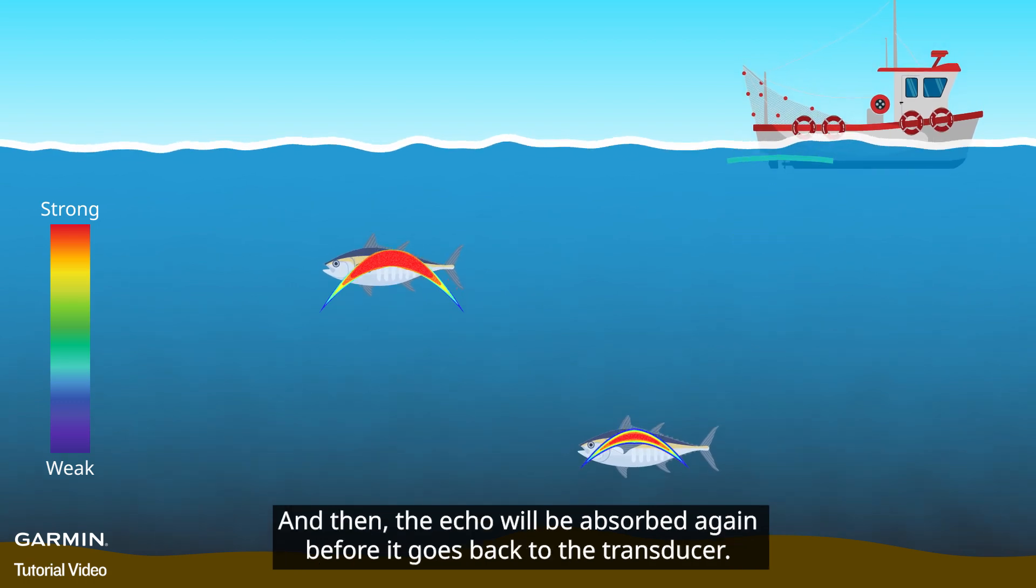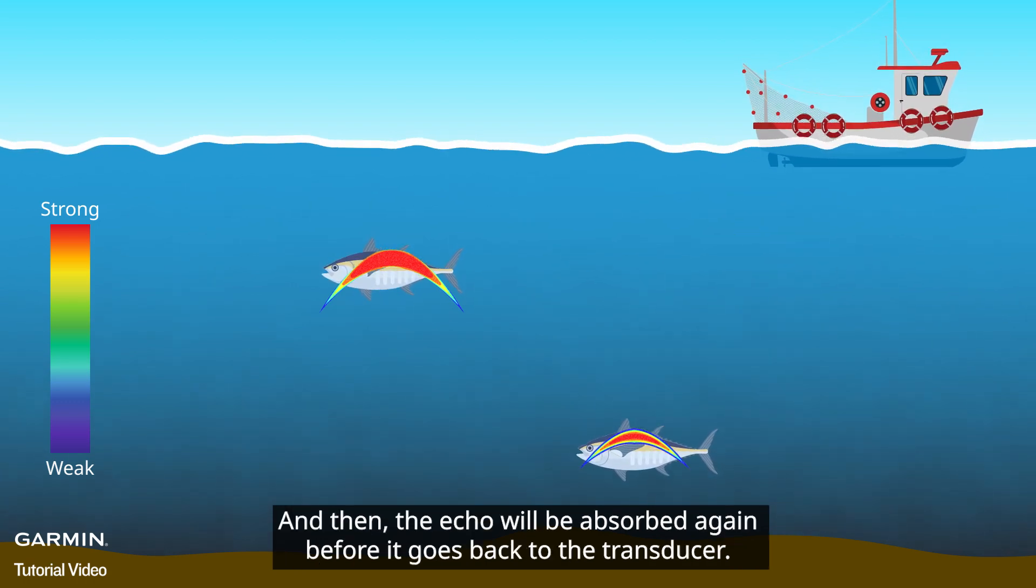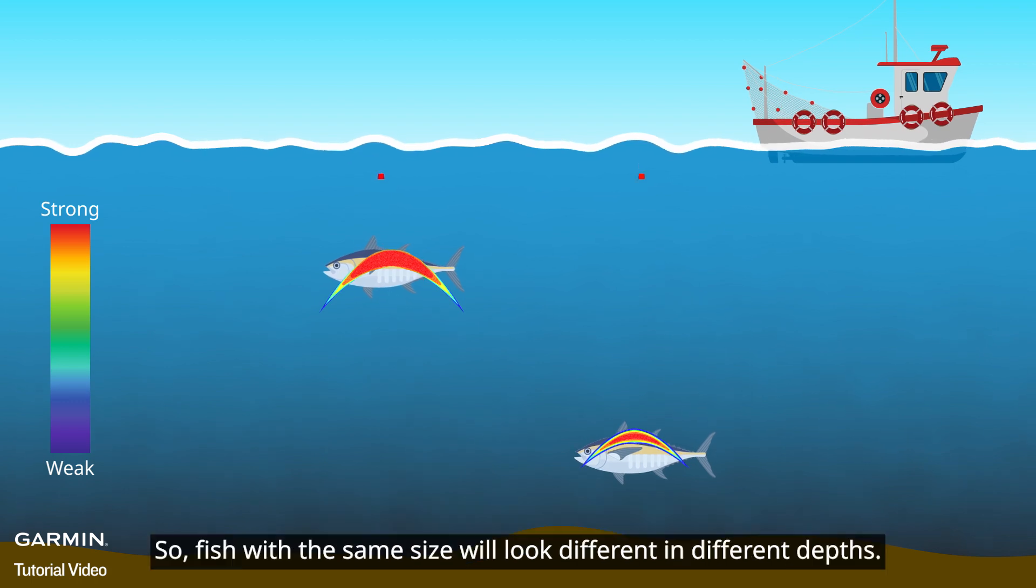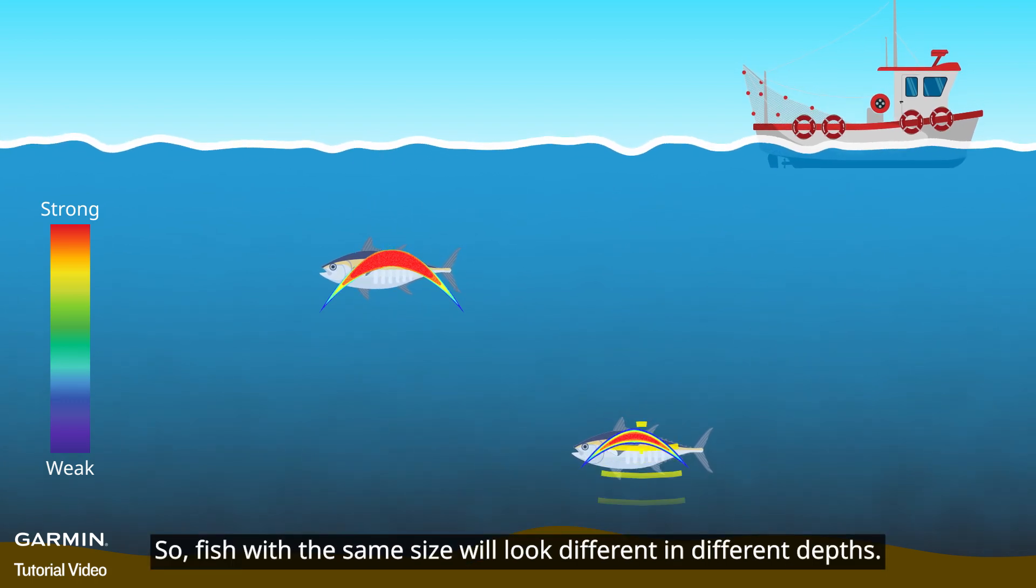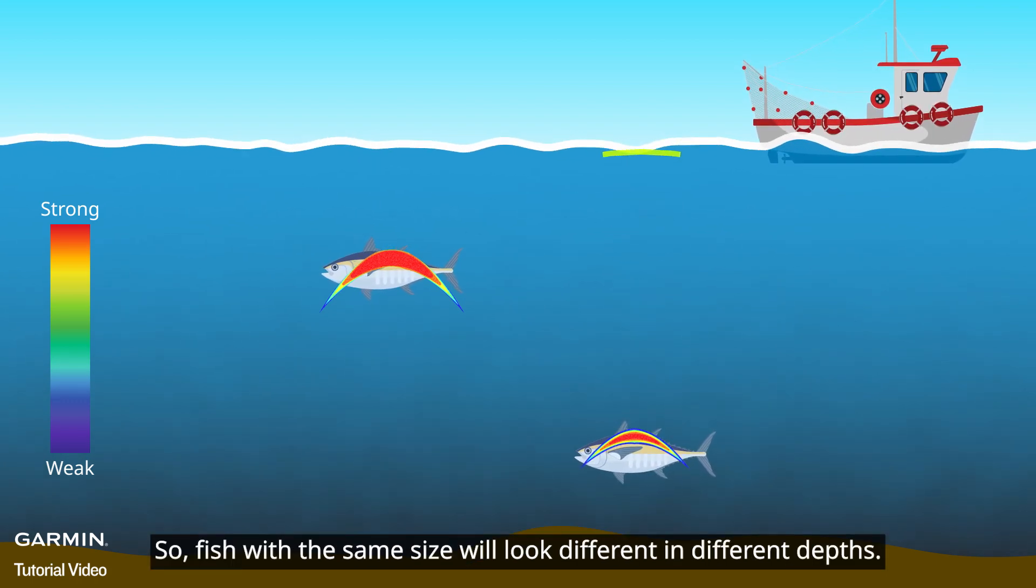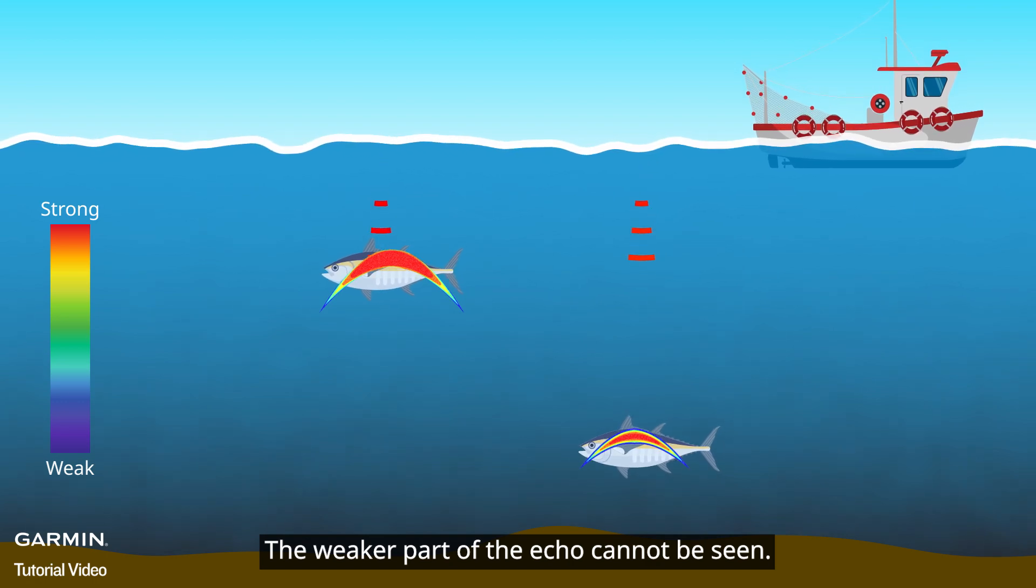And then, the echo will be absorbed again before it goes back to the transducer. So, fish with the same size will look different in different depths. The weaker part of the echo cannot be seen.